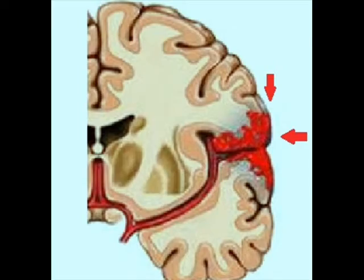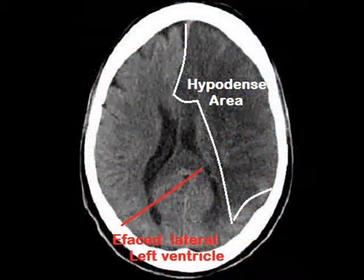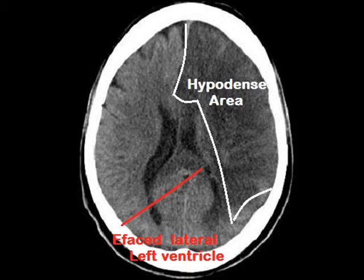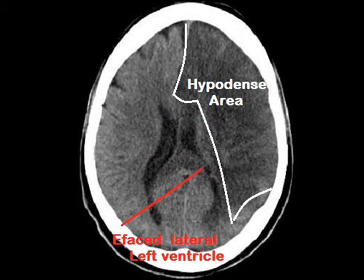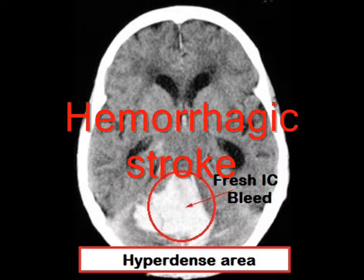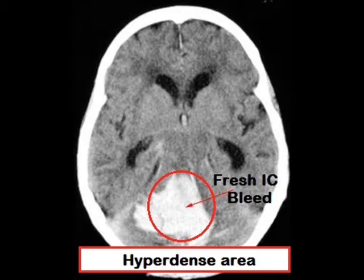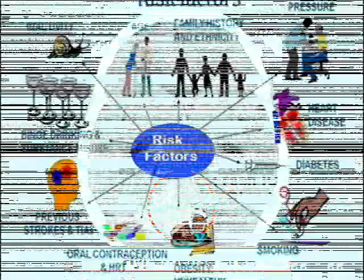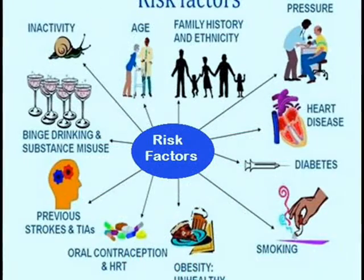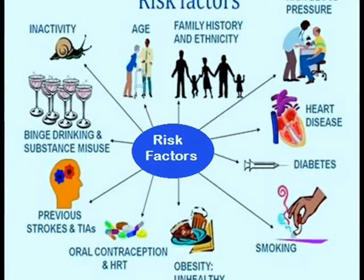Hemorrhagic stroke occurs when a blood vessel ruptures and blood starts leaking around the brain tissues. In CT, it is very easy to distinguish between ischemic and hemorrhagic stroke. In ischemic stroke, you can see a hypodense area, which indicates that blood flow is very low to that area. In hemorrhagic stroke, you can see a hyperdense area, which indicates there was blood leakage in that part of the brain.